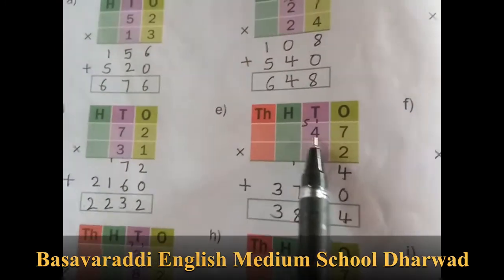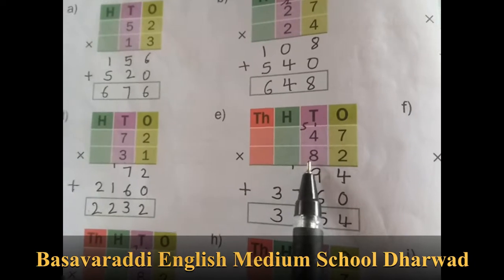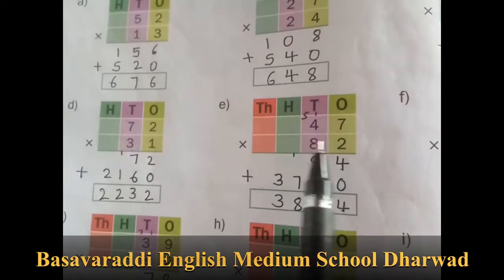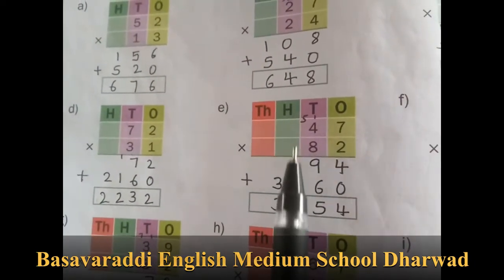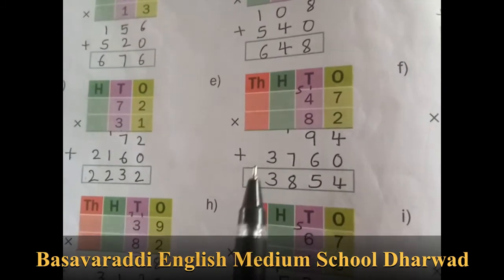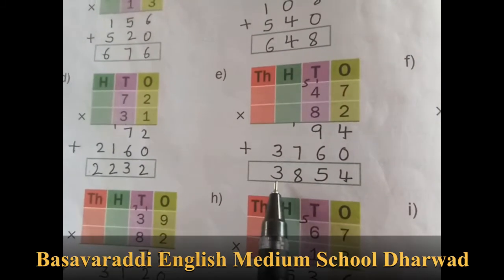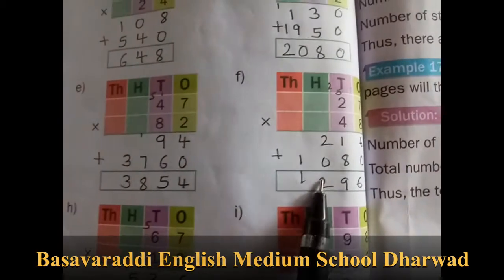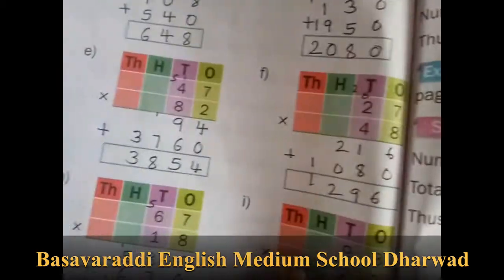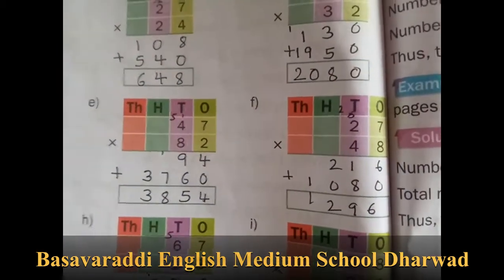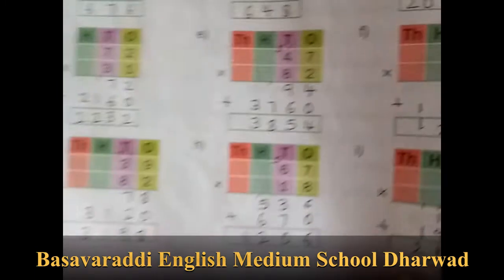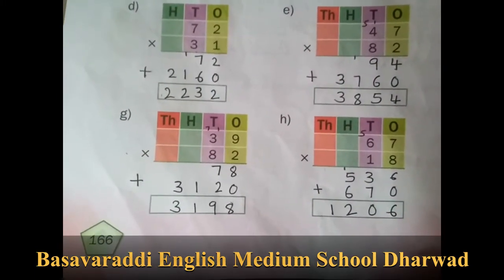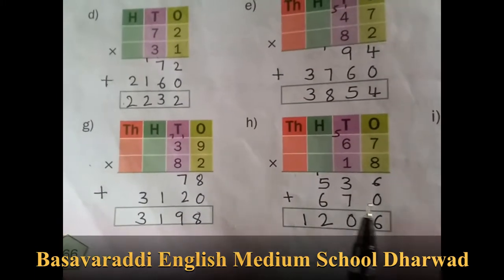Now E1: 47 into 82. So 2 times 7 is 14, and 2 times 4 is 8. 8 plus 1 is 9. The answer is 3854. Same like this, the next sum gives 1296. Then G1 answer is 3198.